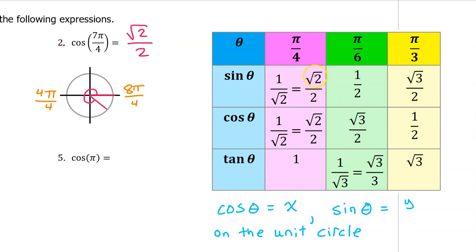By the way, radical 2 over 2 is equivalent to 1 over radical 2. You will see both of these on multiple choice questions, so be comfortable with either one — I will use them interchangeably.